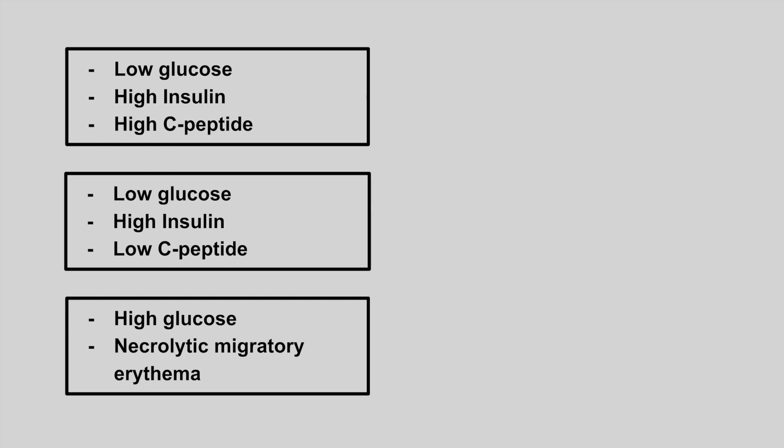The next patient has low glucose, high insulin, and high C-peptide levels. This is an insulinoma.